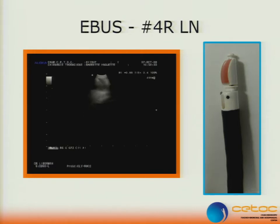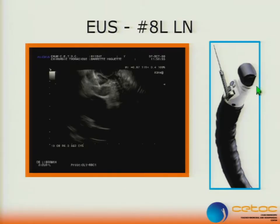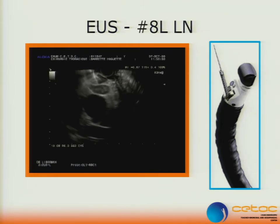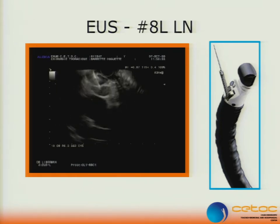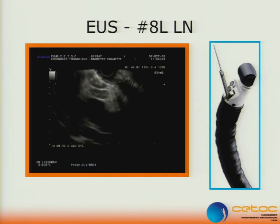As Dr. Silvestri said, this patient was high risk for surgery with a VO2 max at around 10, and so we wanted to prove that they were N0 before going to surgery or radiation, and this was a positive N2 node. These are 8L lymph nodes, posterior to the pericardium between the upper and lower pulmonary vein on the left side — left lower lobe tumor. These are CT and PET-negative lymph nodes, and both of these nodes were positive for non-small cell in a CT/PET-negative mediastinum.